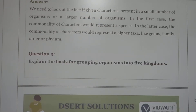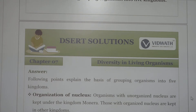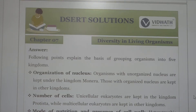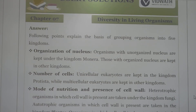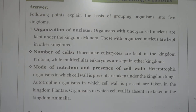Next question: explain the basis of grouping organisms into five kingdoms. The basis includes: first, organization of the nucleus — organisms with an unorganized nucleus are kept under kingdom Monera, while those with an organized nucleus are in the other kingdoms. Second, organization of cells — unicellular eukaryotes are in Protista while multicellular eukaryotes are in other kingdoms. Third, mode of nutrition and presence of cell wall — heterotrophic organisms with a cell wall are in Fungi, autotrophic organisms with a cell wall are in Plantae, and organisms without a cell wall are in Animalia.